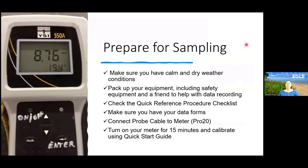To prepare for sampling: make sure you have calm and dry weather conditions, pack up your equipment including all safety equipment, and take a friend to help with data recording. Check out the quick reference procedure checklist to remind yourself of everything you need to do. Make sure you have your data forms, connect your cable to the meter if you have a Pro 20, then turn on your meter for 15 minutes to let it warm up, and then calibrate it using your quick start guide.